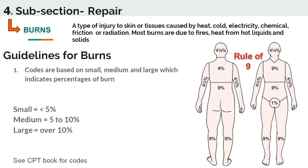What is a burn? A burn is a type of injury to skin or tissues caused by heat, cold, electricity, chemical friction, or radiation. Most burns are due to fires, heat from hot liquids and solids.